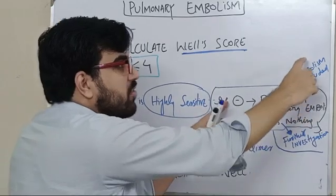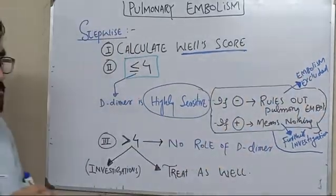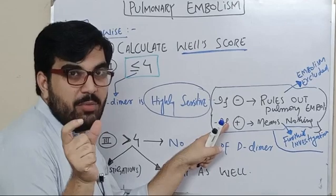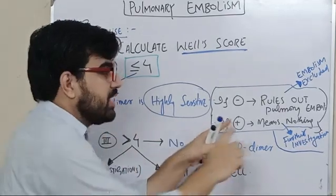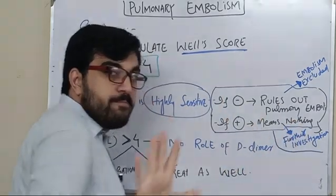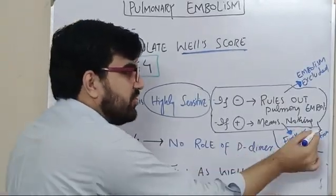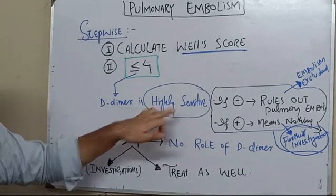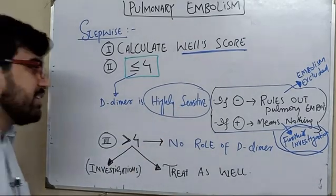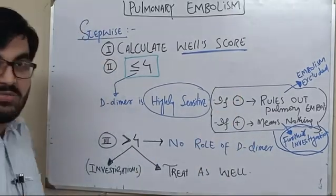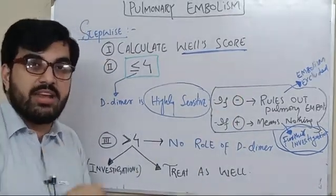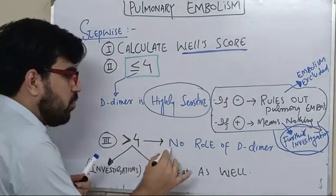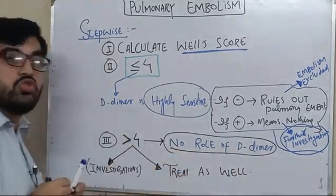If the D-dimer is positive — above the upper limit of normal range, which varies from lab to lab — that means nothing, and you have to do further investigations. It has only high sensitivity and no specificity. If it is positive it means nothing, because even a single injection or IV line can raise the D-dimer significantly. If the Wells score is more than four, there is no role of D-dimer.